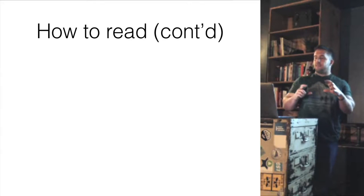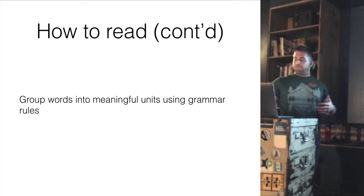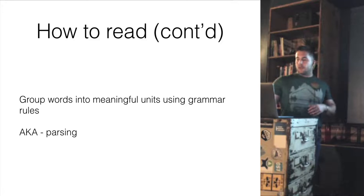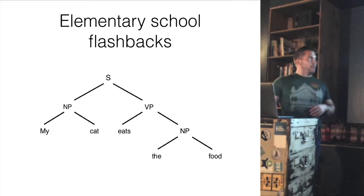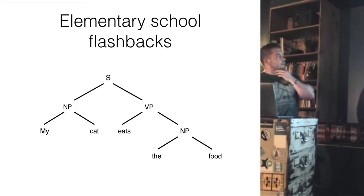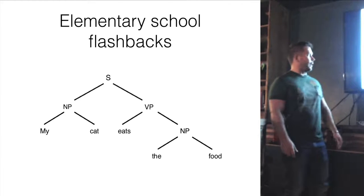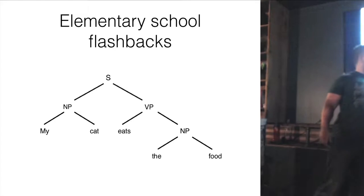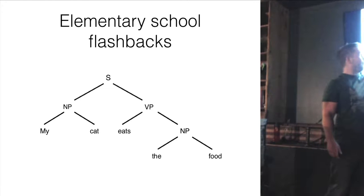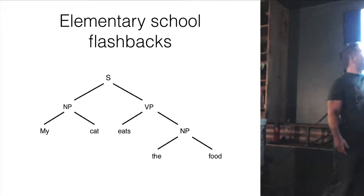Now we've got it broken up into individual tokens, but those words don't mean a lot in isolation — we need the meaning of the sentence as a whole. The next thing to do is start grouping words into meaningful units using grammar rules, which is also known as parsing. Going back to our sentence: 'my' is an adjective, but it's not just an adjective in isolation — it describes 'cat,' so together they make a noun phrase. 'Eats' is a verb, and its object is 'the food,' which is another noun phrase. The verb together with its object makes a verb phrase. A noun phrase and a verb phrase combine into a sentence.